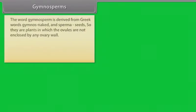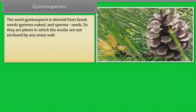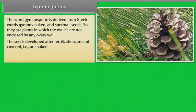Gymnosperms. The word Gymnosperm is derived from Greek words 'Gymnos', meaning naked, and 'sperma', meaning seeds. So they are plants in which the ovules are not enclosed by any ovary wall, and the seeds develop after fertilization and are not covered — that is, they are naked.